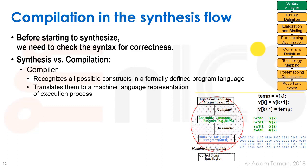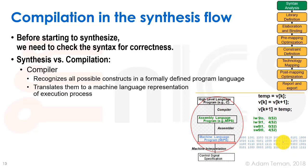However, we're talking about a synthesizer, not a compiler. Generally, when we talk about a compiler in a regular sequential programming language, what we do is we recognize all the possible constructs in a formally defined program language. We translate them to a machine language representation of an execution process — all kinds of instructions that our processor can carry out. We take our higher-level language, turn it into assembly code, and then use an assembler to turn it into machine language. That's basically what a compiler does.